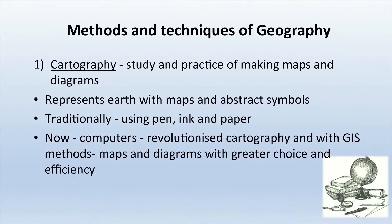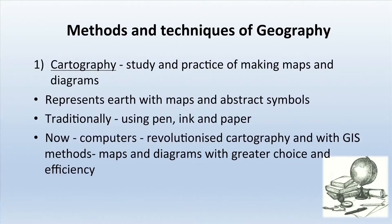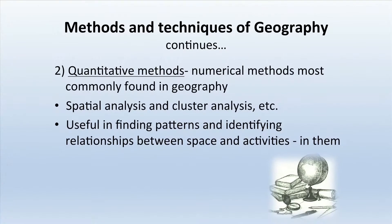Cartography is the study and practice of making maps and diagrams; it represents the earth with maps and abstract symbols. Traditionally done with pen, paper, and ink, advanced computers have revolutionized cartography. GIS (Geographical Information System) enables maps and diagrams with greater choice and efficiency, and commercial-quality maps now use highly efficient software. The main types used today are Computer-Aided Design (CAD), Geographical Information Systems (GIS), and Global Positioning Systems (GPS).